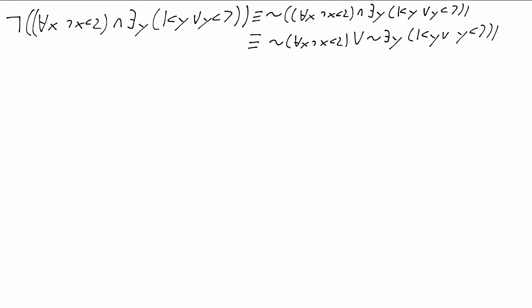Then we keep pushing the negation inward — we pass it through the quantifiers — giving us exists x, not not x less than 2, or for all y, not 1 is less than y or y is less than 7. Again, as we push the negations in, the quantifiers swap.